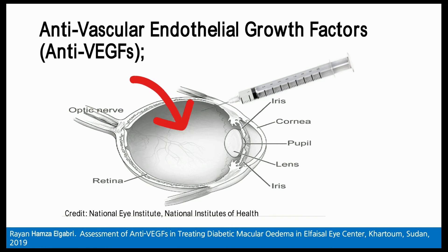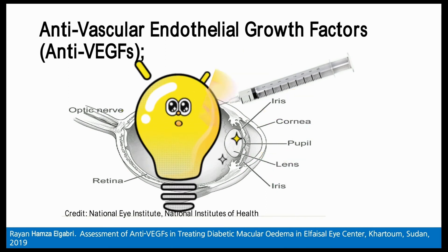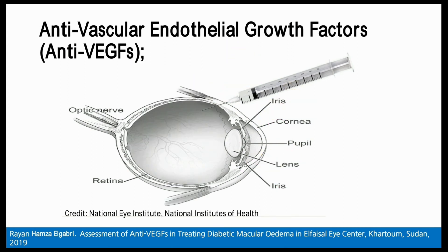Anti-VEGF injections work against the vascular endothelial growth factors in the retina to control the growth of abnormal blood vessels, which is the main pathological problem of diabetic retinopathy. They have become the first-line therapy for diabetic retinopathy, but their use is still limited in Sudan. We have only two types of anti-VEGF injections available in the country.